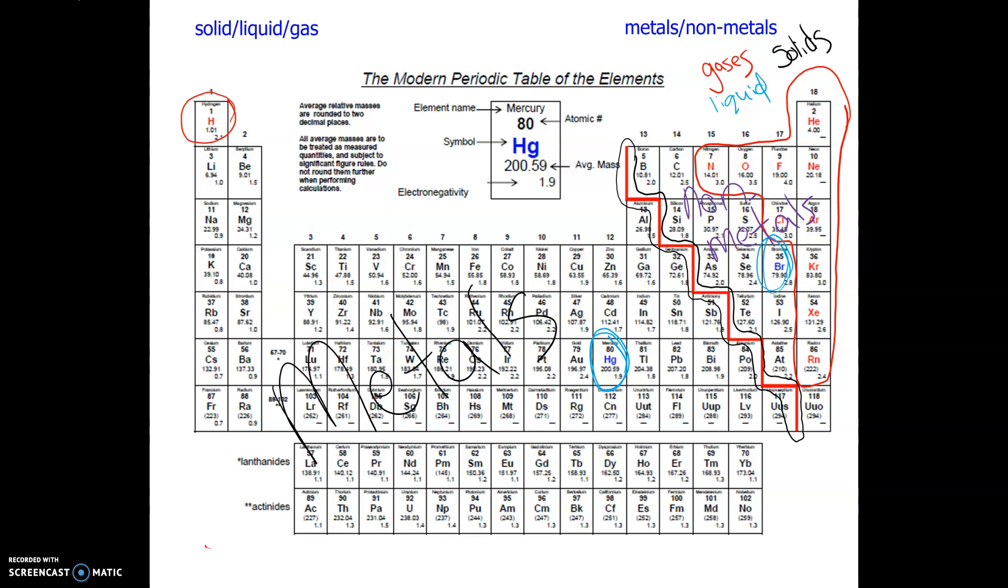So it's that staircase that cuts through that breaks it into metals and non-metals. And we do have some transition metals, but once again we're going to get through that later. So here's just a quick classification of metals, non-metals, solids, liquids, and gases.